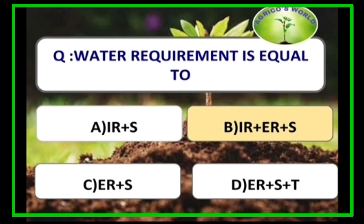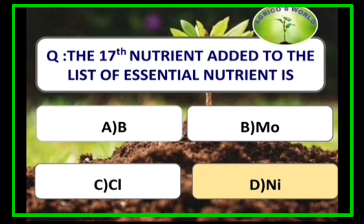Water requirement is equal to irrigation requirement plus evaporation requirement plus soil profile contribution. The 17th nutrient added to the list of essential nutrients is nickel.